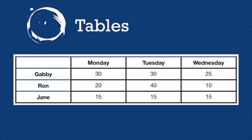If the source code for a table is not done correctly, a screen reader might instead read all headers first — 'Monday, Tuesday, Wednesday' — followed by values without context: 'Gabby 30, 30, 25, Ron 20, 40, 10...' With only three columns this might be manageable, but imagine a table with seven or more columns — it would be incredibly difficult to keep track. If you plan to use tables on your web page, you will need to properly code them for screen readers. Without proper coding, a table can be absolutely useless.